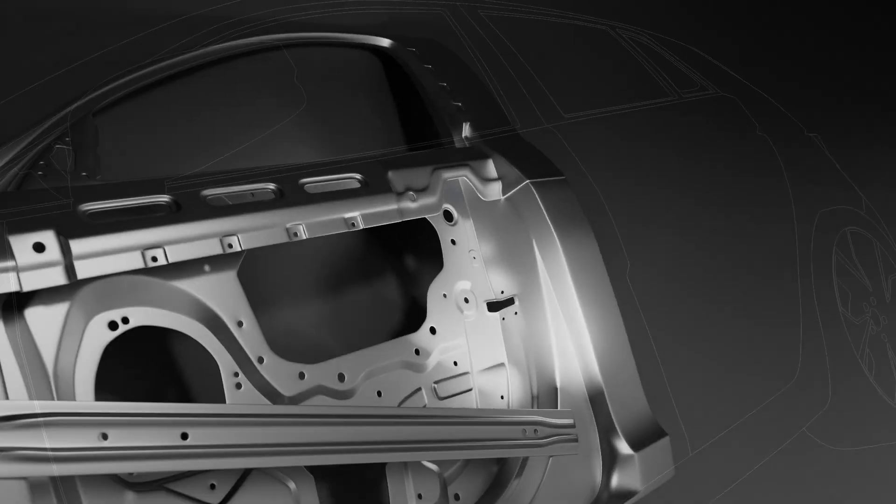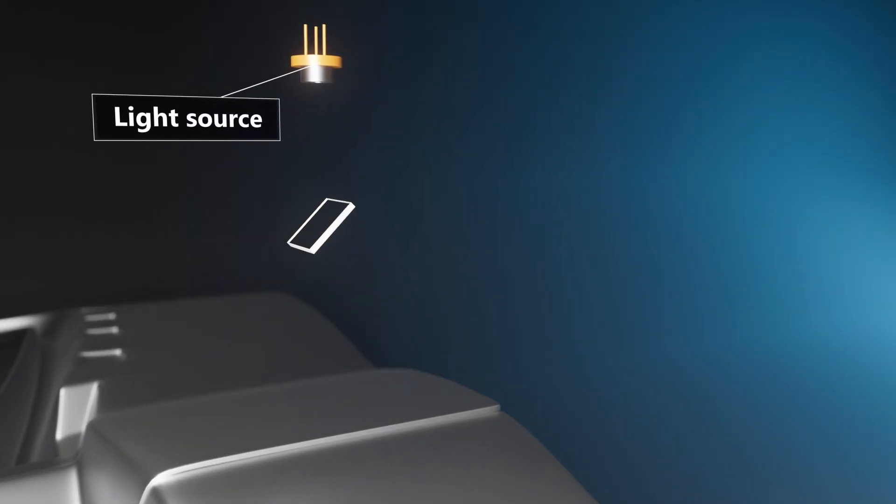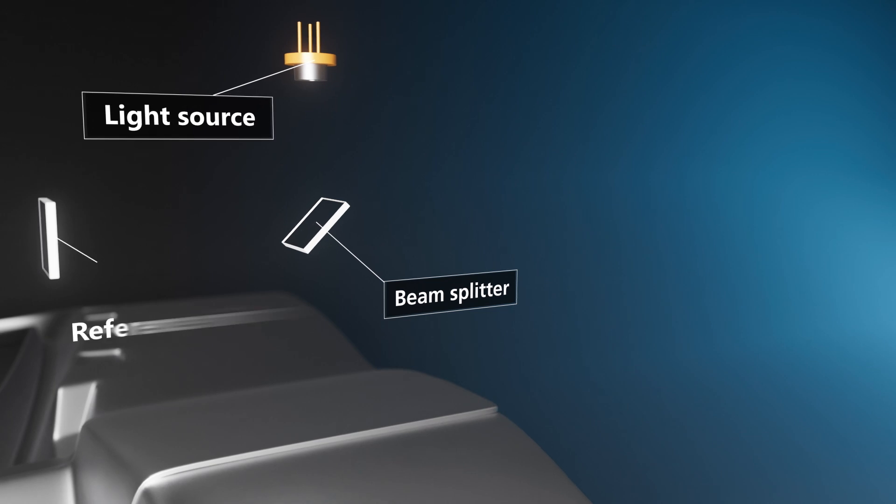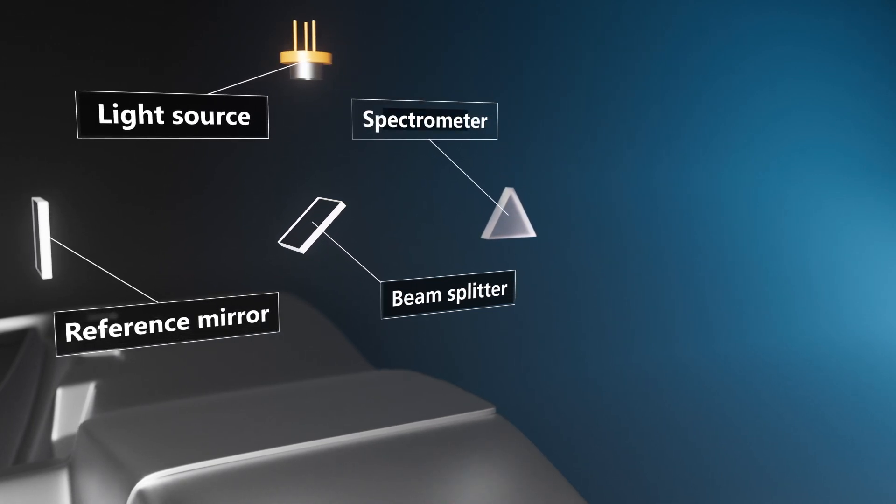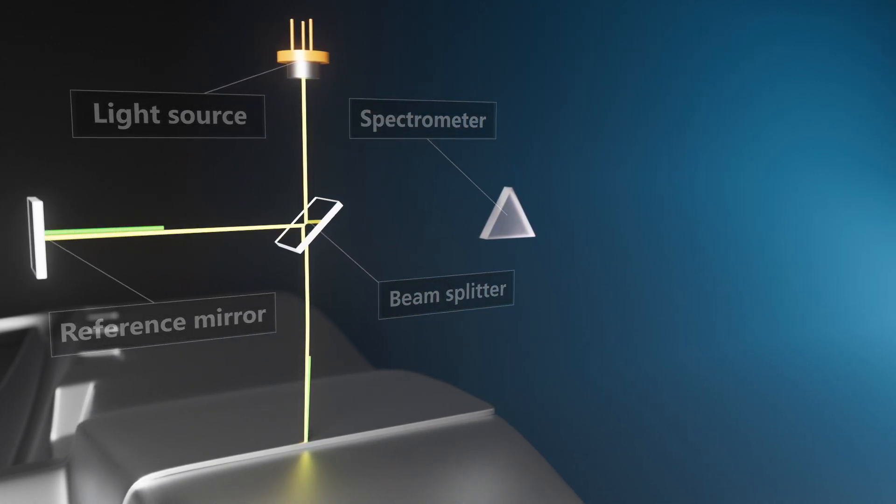OCT is a technique for measuring distances. An OCT system consists of a coherent light source and an interferometric setup made up of a reference path, a measurement path, and a spectrometer.